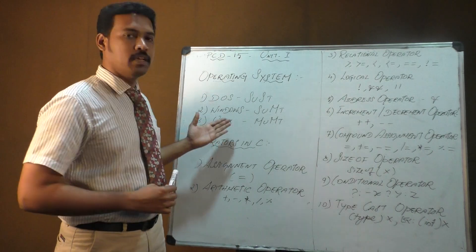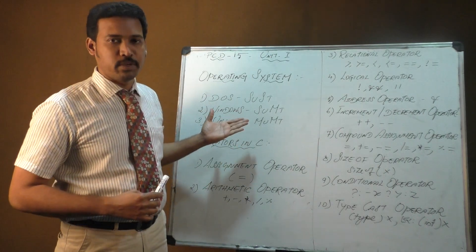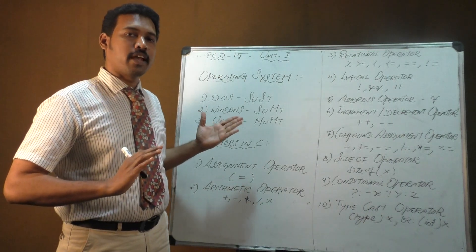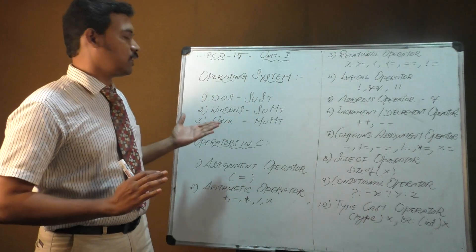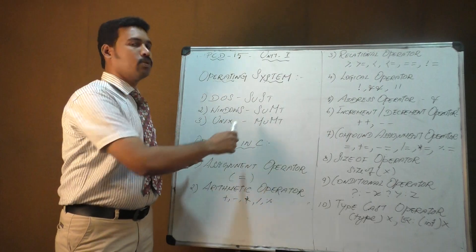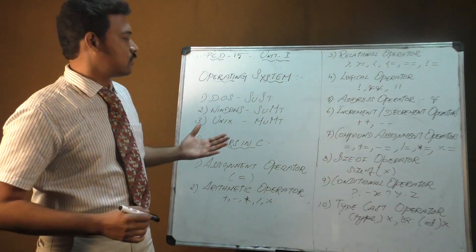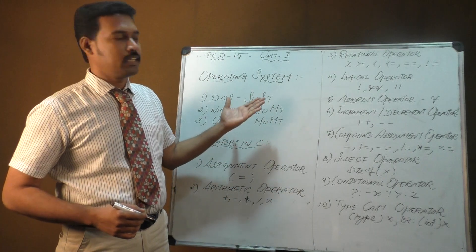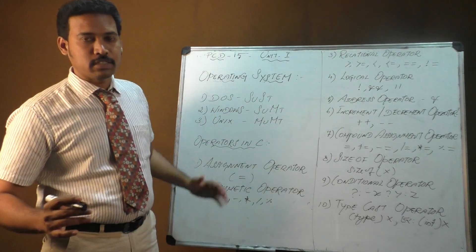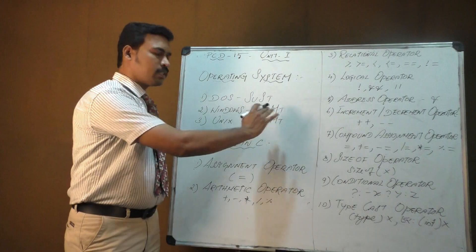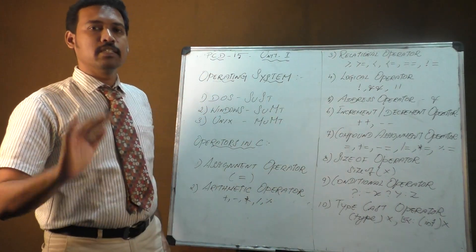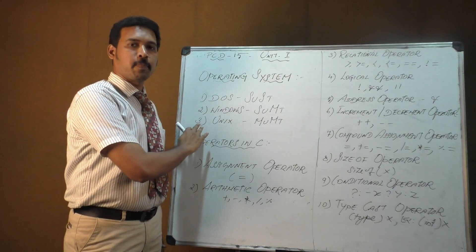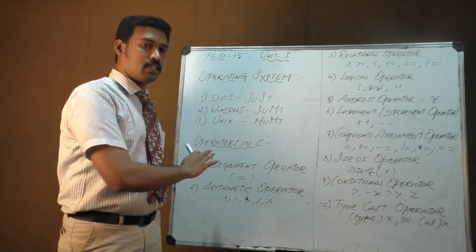Windows is a graphical user interface, called GUI. Windows is user-friendly and uses graphical-oriented interaction. The concept behind Windows is single user, multi-task, whereas DOS has single user, single task.